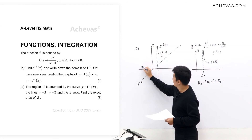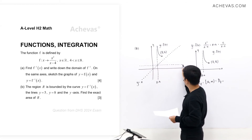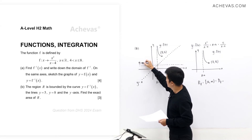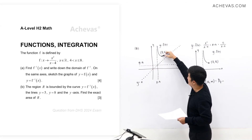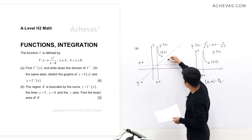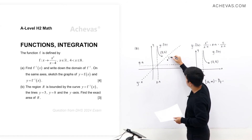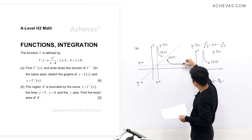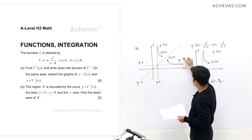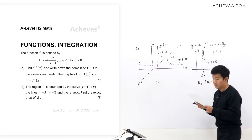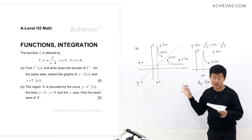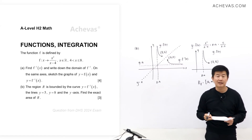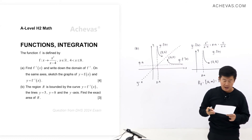Reflecting this about the line y = x, the vertical asymptote becomes a horizontal asymptote y = 4, and the point (8, 16) becomes (16, 8). We draw the graph of y = f⁻¹(x) turning towards this horizontal asymptote. This completes Part A.